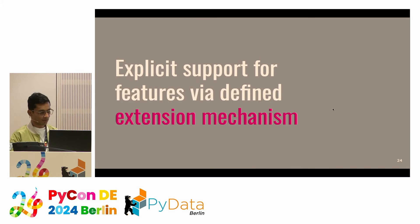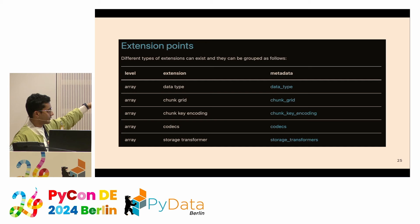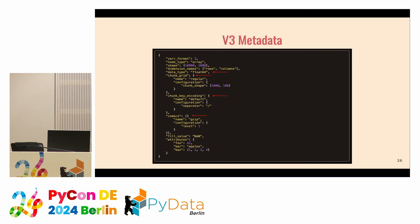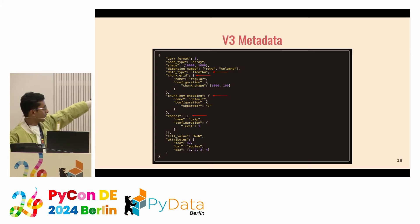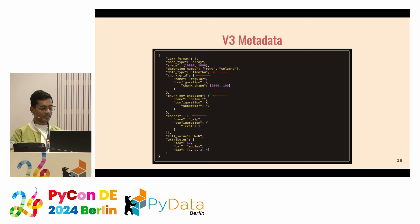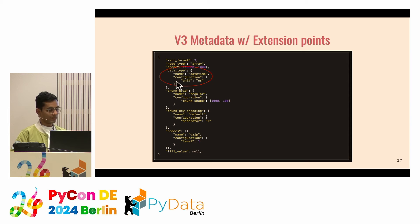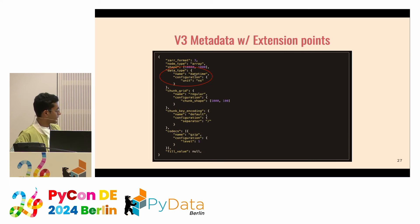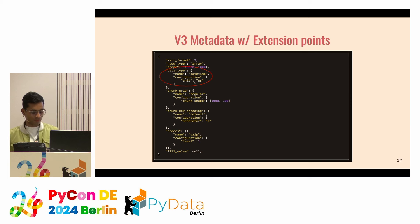We also added explicit support for features via the extension mechanism. The various metadata fields inside a Zarr array include the array type, chunk grid, encoding, codecs, and storage transformers. For example, the data type field might be float64, and using extension points you could define a new data type — such as datetime with a unit of nanoseconds. Whenever you propose a new change to the core specification via the extension mechanism, the metadata field and all associated properties will change accordingly.